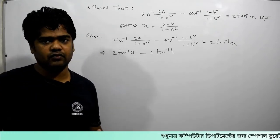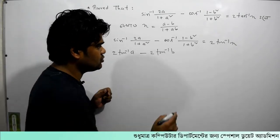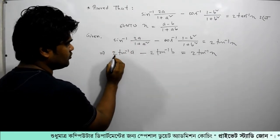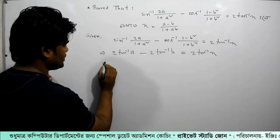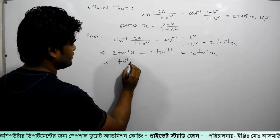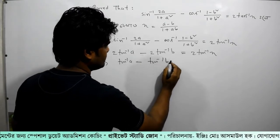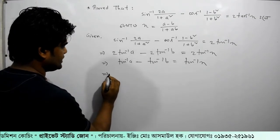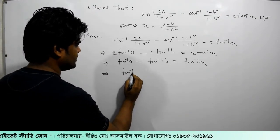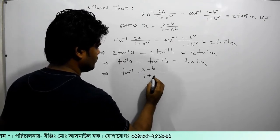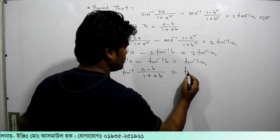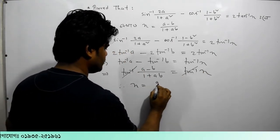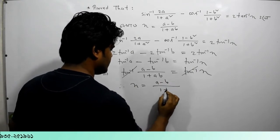cos inverse 1 minus x square divided by 1 plus x square equals 2 tan inverse x. So sin inverse 2a minus x square equals tan inverse x square. And sin inverse x square equals a minus b divided by 1 plus ab.